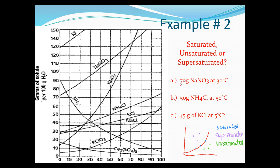First example: 70 grams of NaNO₃ in 100 grams of water at 30 degrees. Find the NaNO₃ line and look at 30 degrees — we're at about 95 grams at that temperature. But we only have 70 grams, so we're below the line. That means it's unsaturated — we haven't reached the saturation point yet, so we could actually add more and it would still dissolve.